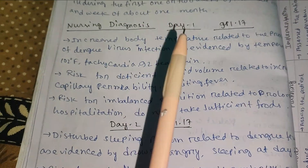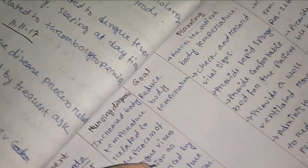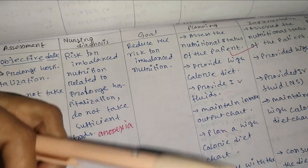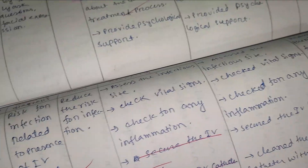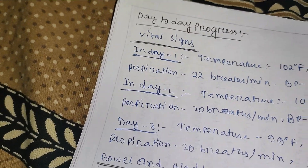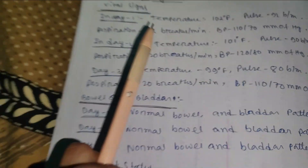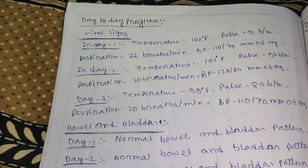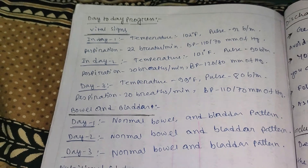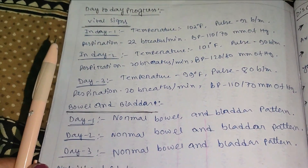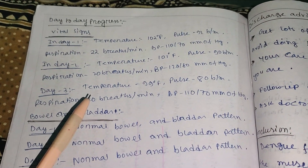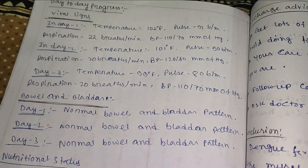Next is nursing diagnosis, written according to day 1, day 2, and day 3. After that, write the nursing care plan for each day. Following the nursing care plan, document the day-to-day progress of the patient: how much improvement is seen in areas such as consciousness level, bowel pattern, nutritional status, and vital signs.